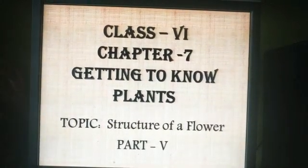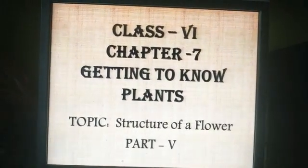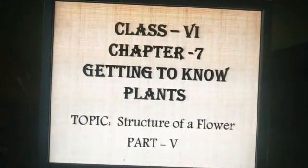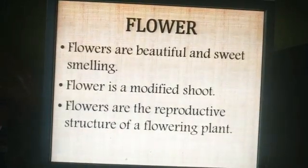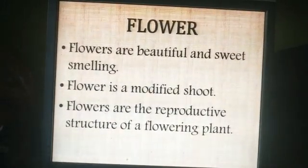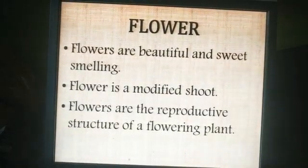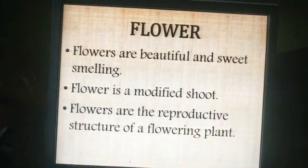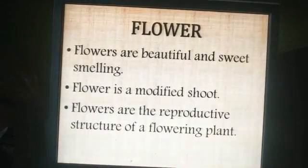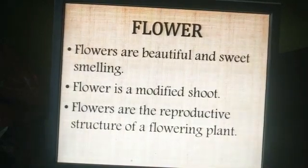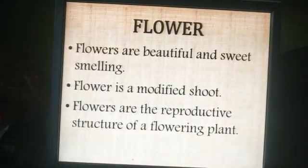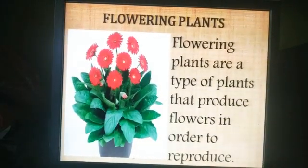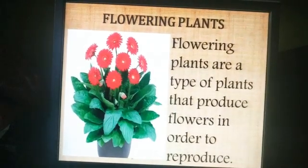Good morning students. Today we will start with chapter 7, getting to know plants. The topic we are going to see is the structure of a flower. Flowers play a vital, crucial role in the life cycle of a plant. A flower is a reproductive organ of a flowering plant. Flowering plants are a type of plant that produce flowers in order to reproduce.